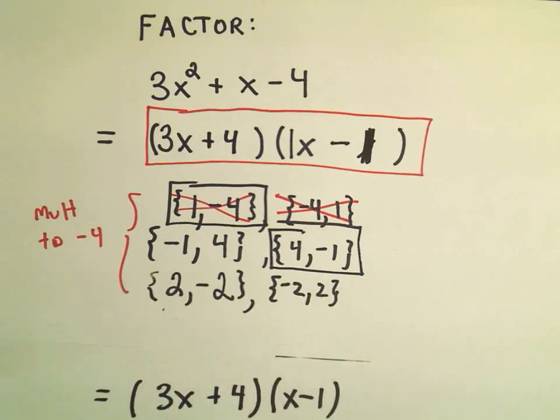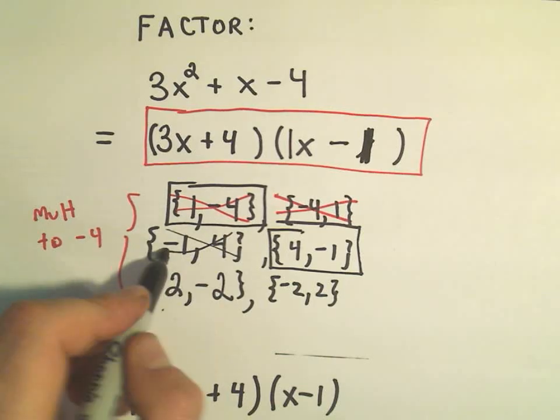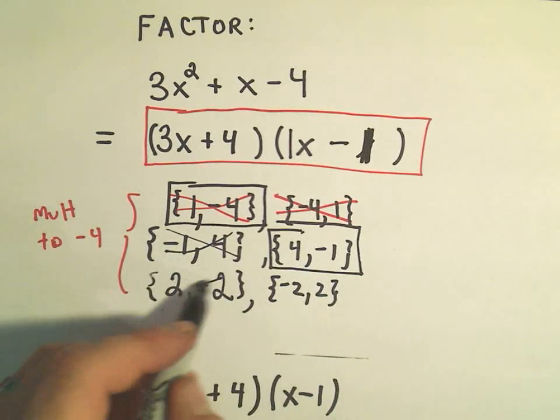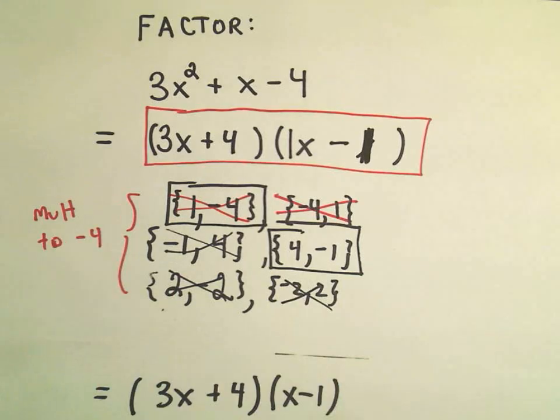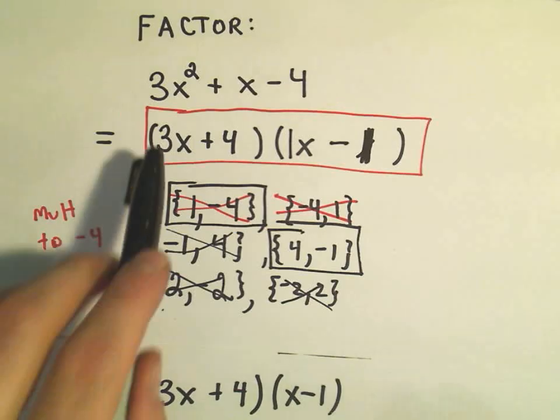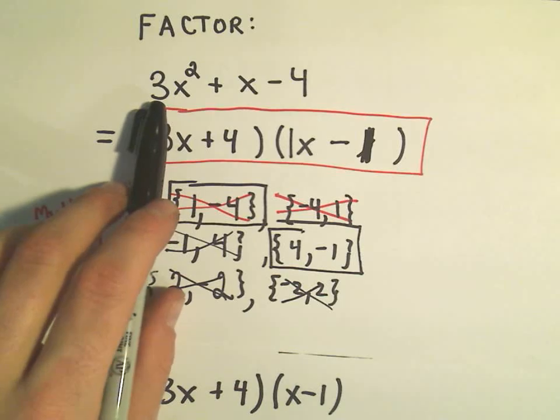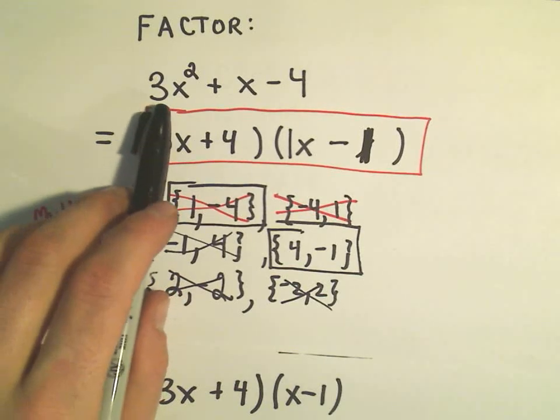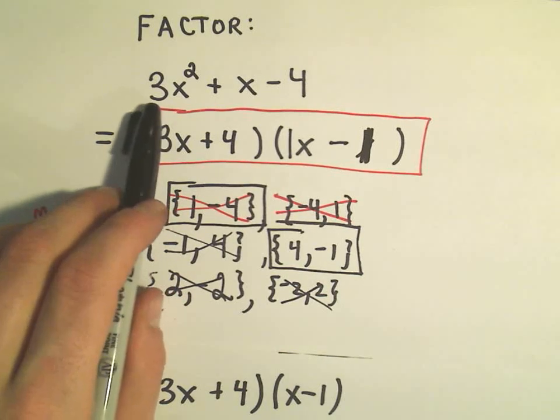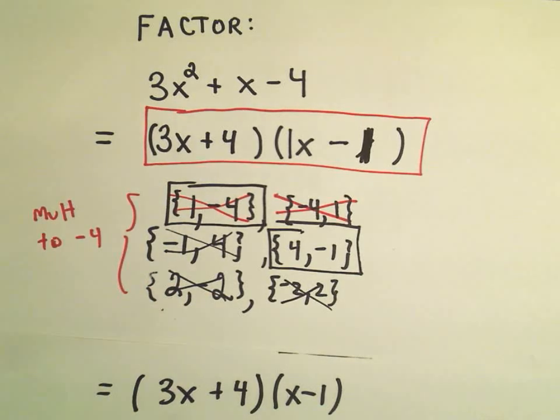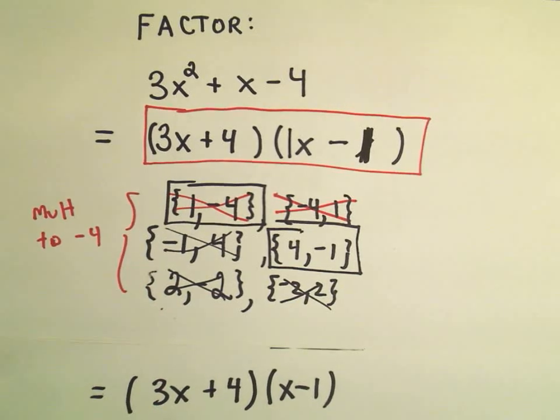So, again, I kind of jumped the gun a little bit. You could have checked this and found it didn't work. Hopefully you didn't check 2 negative 2 and negative 2 2 until you finally got to that one. So, you can see that already it's very tedious. The worst part is going to be if the number in front of the x squared has lots of factors. Because then you have to look at all the different combinations of that one as well. So, this is definitely something that's been giving algebra students nightmares and headaches for a long time. It takes a lot of practice.